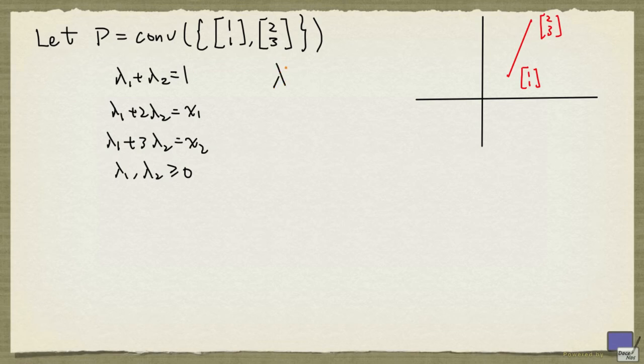So first of all, λ_1 is 1 minus λ_2. And we can substitute 1 minus λ_2 for λ_1 in each of these. So that will give us this system here.